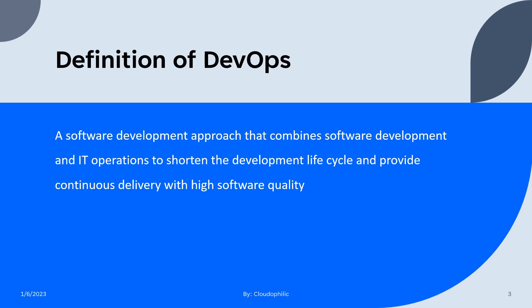Let's start by defining DevOps. At its core, DevOps is a software development approach that combines software development and IT operations to shorten the development life cycle and provide continuous delivery with high quality software. This is the central aim of DevOps.